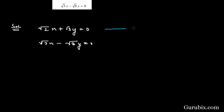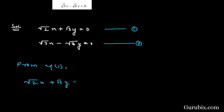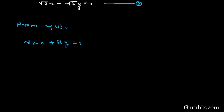We label these as equation number one and equation number two. We shall start from equation number one: root 2·x plus root 3·y equals 0. This means root 2·x equals minus root 3·y, so x equals minus root 3 over root 2 times y.